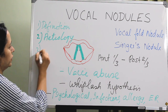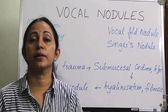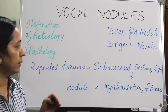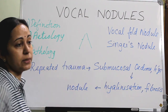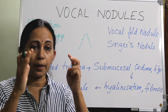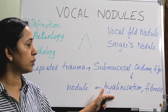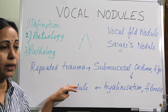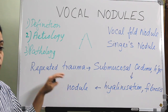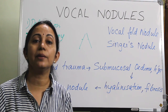Regarding pathology: the area of maximum vibration of the vocal folds during phonation is at the junction of the anterior one-third and posterior two-thirds, on the membranous vocal cords. During voice abuse, the wave pattern strikes at this point and causes trauma. This repeated trauma leads to submucosal edema and hemorrhage, which in turn causes hyaluronization and fibrosis, and the overlying epithelium results in nodule formation.